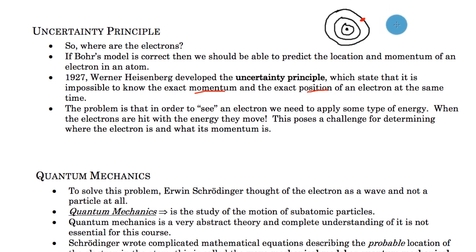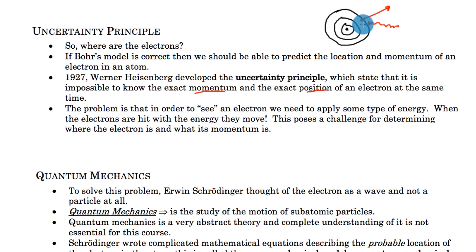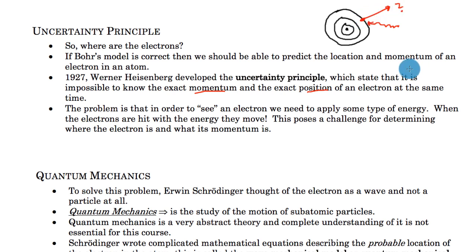The problem is: if I try to see the electron, I have to add energy to it. As we saw with Bohr's model, when you add energy to an electron it moves — the electron gets displaced. So every time we try to see the electron, we alter its position, leading to uncertainty. This is the uncertainty principle: you cannot know the position and the exact momentum of an electron at the same time. This showed that Bohr's model of orbits around the nucleus was not completely sufficient, though his idea of quantized energy was correct.